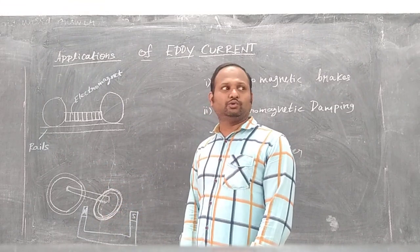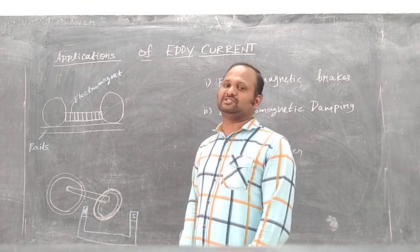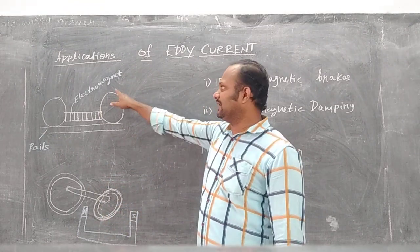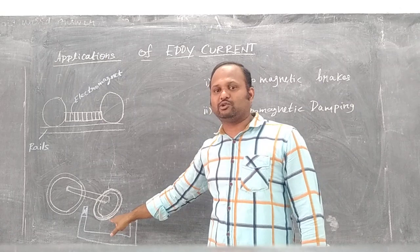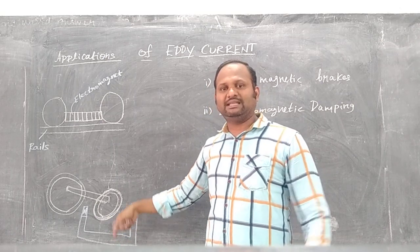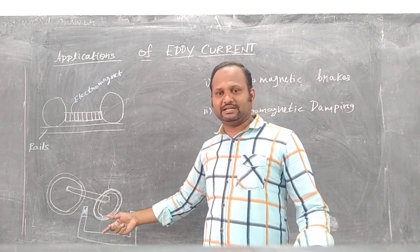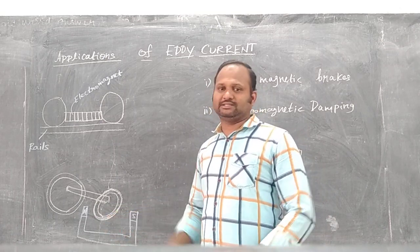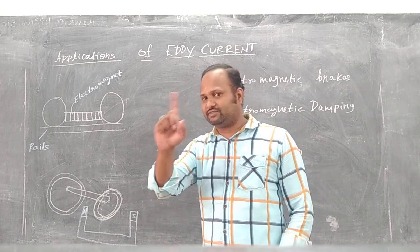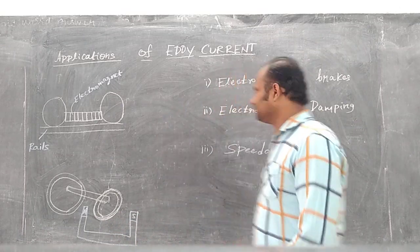So there are two brakes in this braking system: one is electromagnetic linear brake and another one is electromagnetic circular brake. With the help of eddy currents, we can use these brakes. This is the first application.